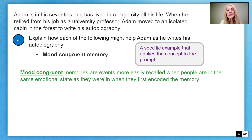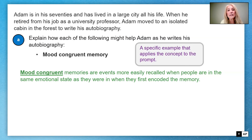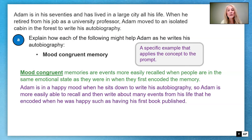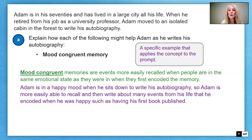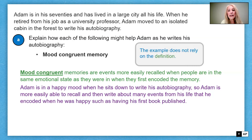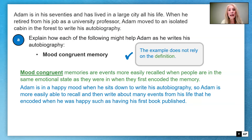We're going to provide a specific example that applies the concept to the prompt. Adam is in a happy mood when he sits down to write his autobiography, so he is more easily able to recall and write about many events from his life that he encoded when he was happy — such as having his first book published. This example does not rely on the definition, so someone with no psychology background can understand what a mood congruent memory is from the example alone.